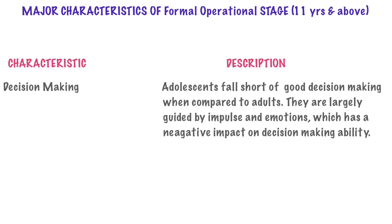Regarding decision making, adolescents fall short of good decision making at this stage as compared to adults. This is largely because adolescents are primarily guided by impulse and emotions, which hinders their ability to think logically and to apply their logic to decision-making situations. Having covered the major characteristics of formal operational thought, let us now go to our overview slide.